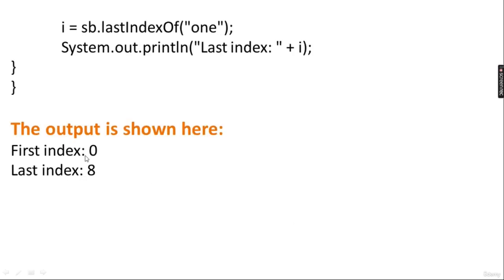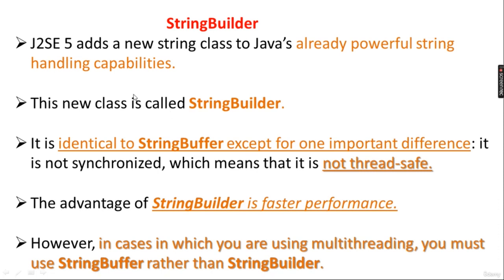J2SE 5 adds a new string class called StringBuilder. It is identical to StringBuffer except for one important difference: it is not synchronized, which means it is not thread-safe. The advantage of StringBuilder is faster performance. However, in cases where you are using multi-threading, you must use StringBuffer rather than StringBuilder.